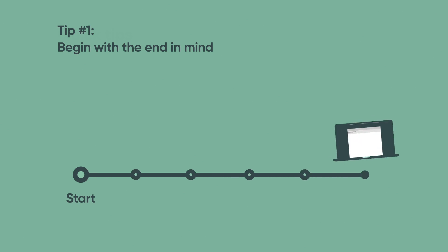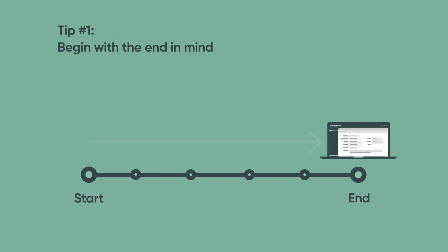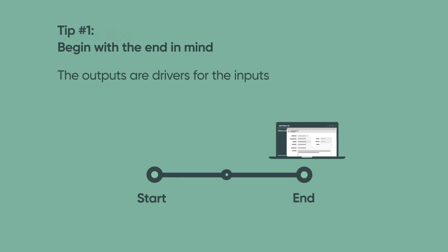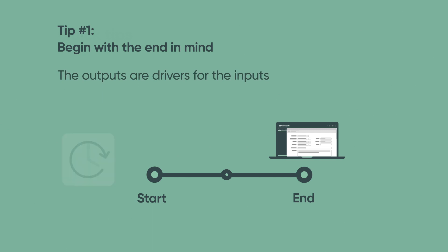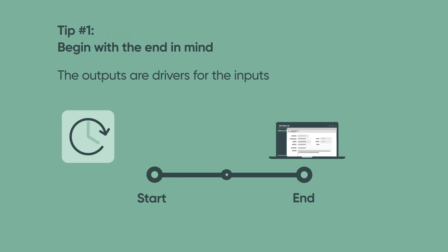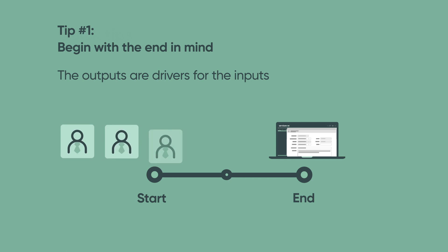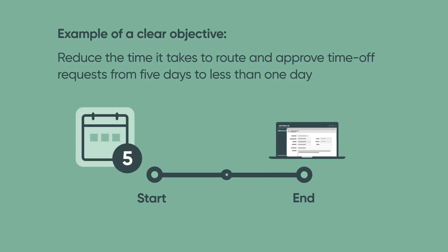Here are a couple of quick tips before you start building. First, begin with the end in mind. Understanding and visualizing your desired solution, whether virtually or on a whiteboard, can help you determine the steps to build your app. Often the outputs are the drivers for the inputs. Identifying your goals and objectives helps you manage conversations with key stakeholders so that your app specifically addresses your desired business outcomes. An example of a clear objective might sound like this: reduce the time it takes to route and approve time-off requests from five days to less than one day.